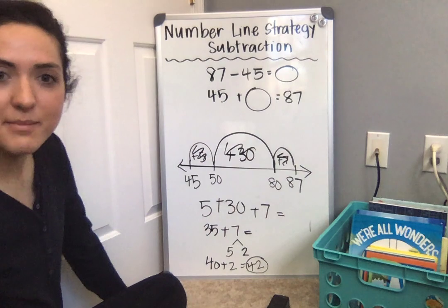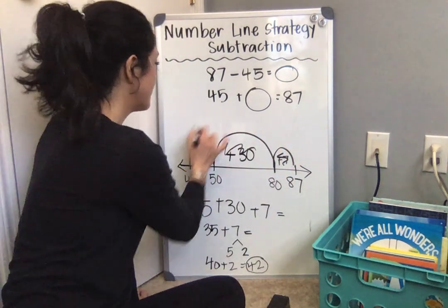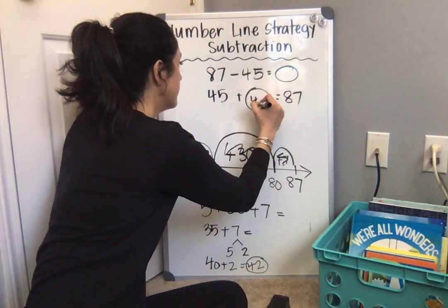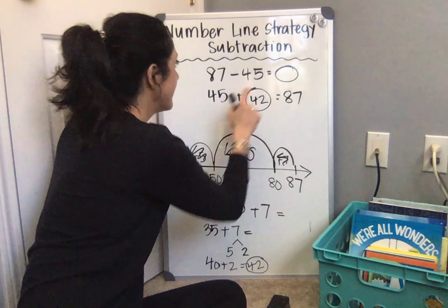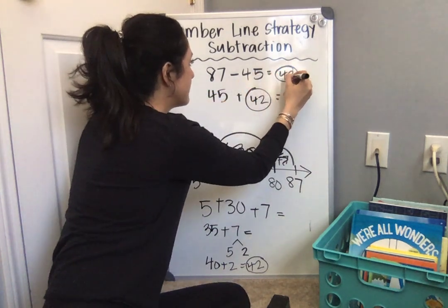Getting right to the end of my board there. All right. So 42 is my answer. I jumped 42 altogether. So 45 plus 42 equals 87. So then I know that 87 minus 45 is equal to 42.